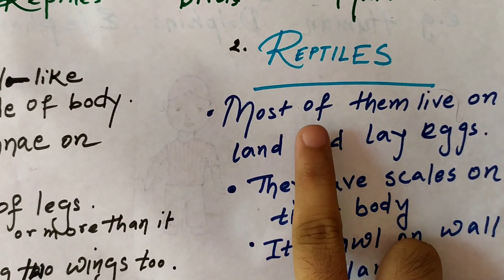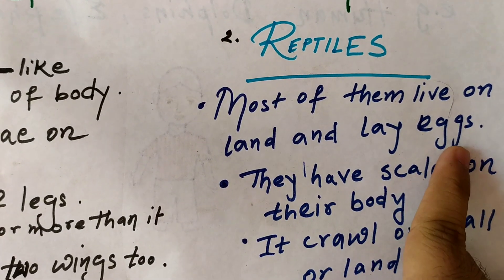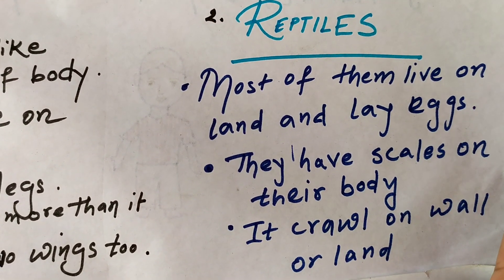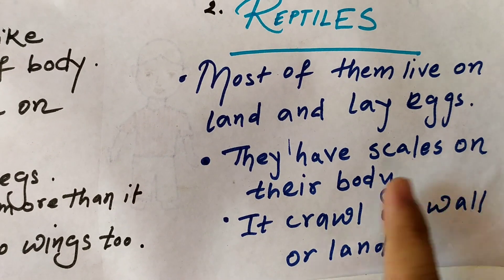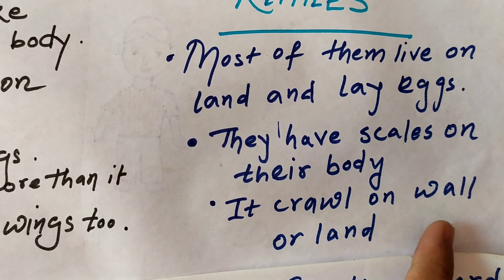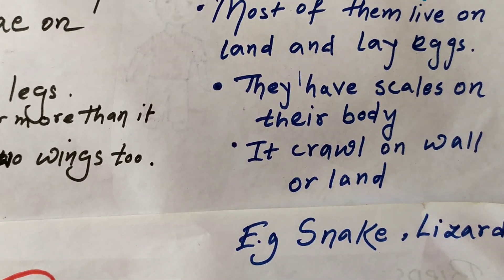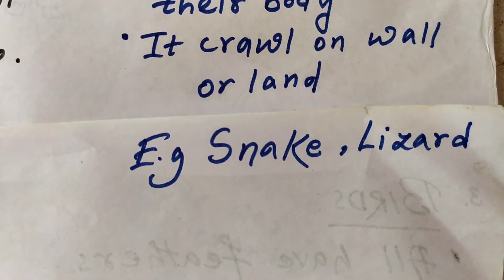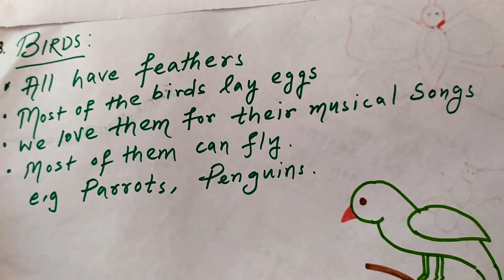Moving to the next category: reptiles. First point: most of them live on land and lay eggs. Second: they have scales on their body. Third: they crawl on walls or land. Examples are snake and lizard — you can observe the snake diagram here.